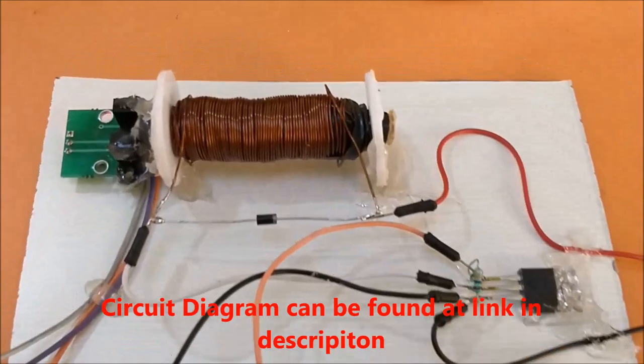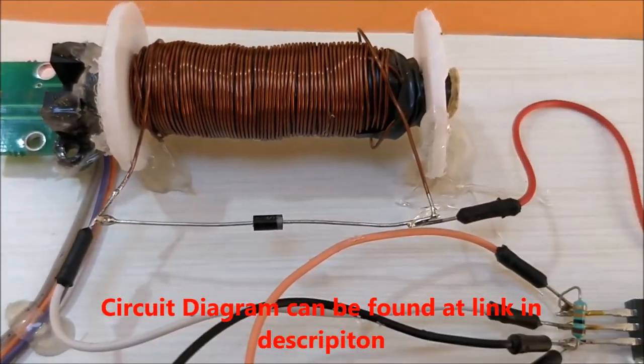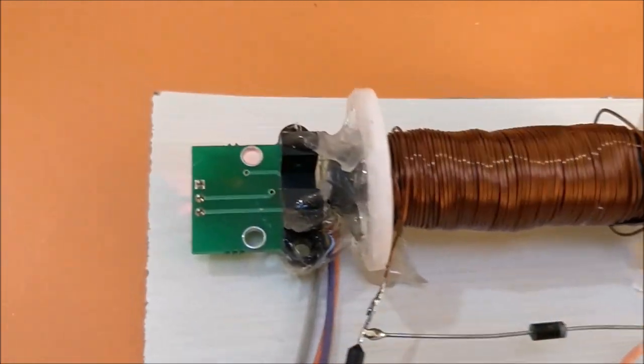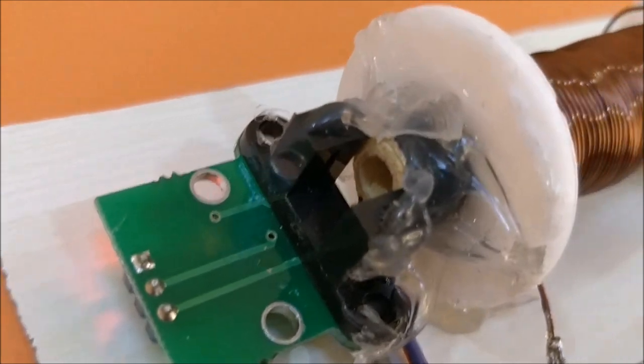So as you can see we have our coil over here with a diode to release the reverse current, and we have the sensor over here which is an IR sensor.